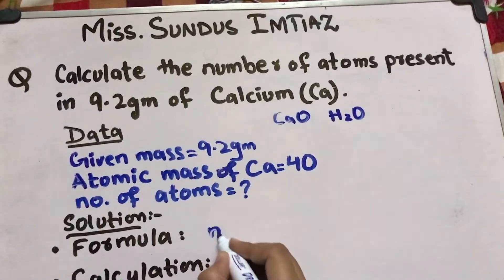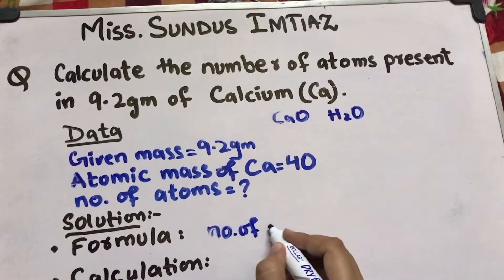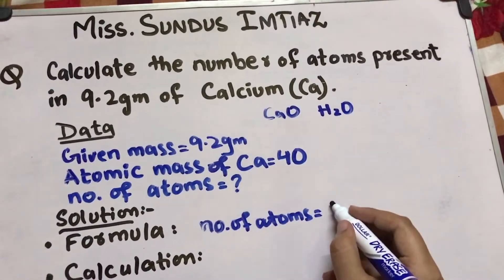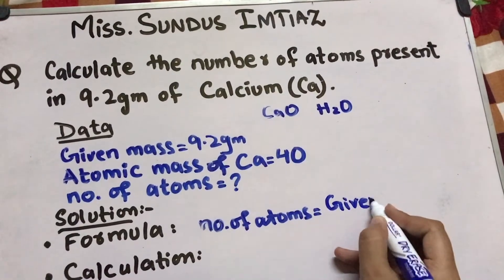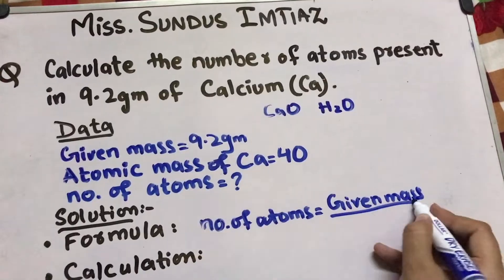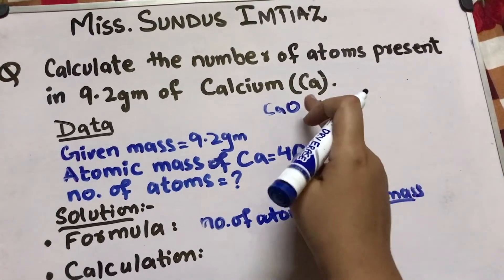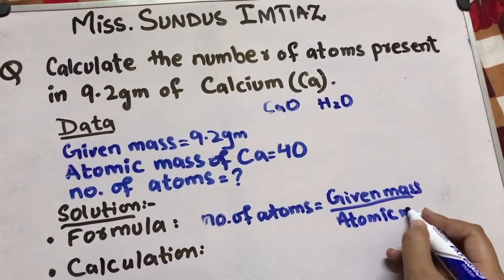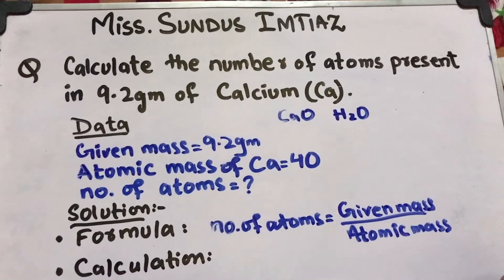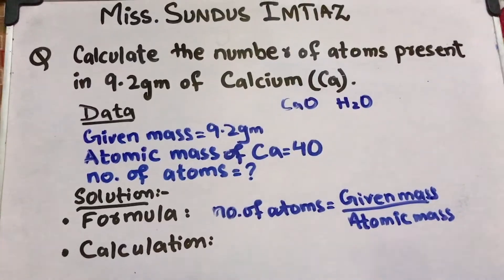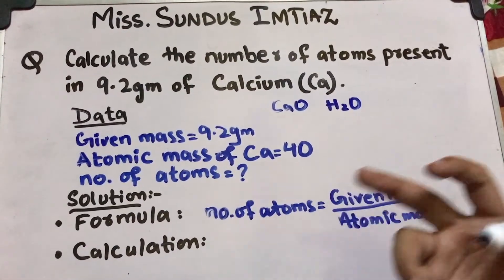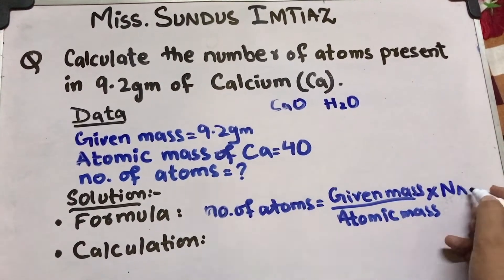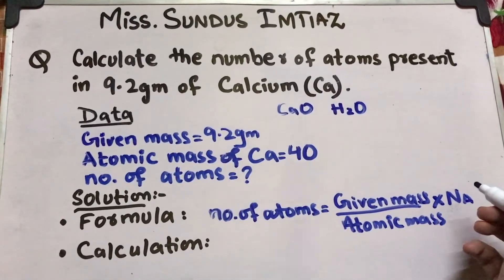Let's do the formula. So the formula for number of atoms is very simple. It is same as the moles. If you remember that the moles formula is given mass upon molecular mass or atomic mass, because here we have atom, we write atomic mass. This formula is for number of atoms.